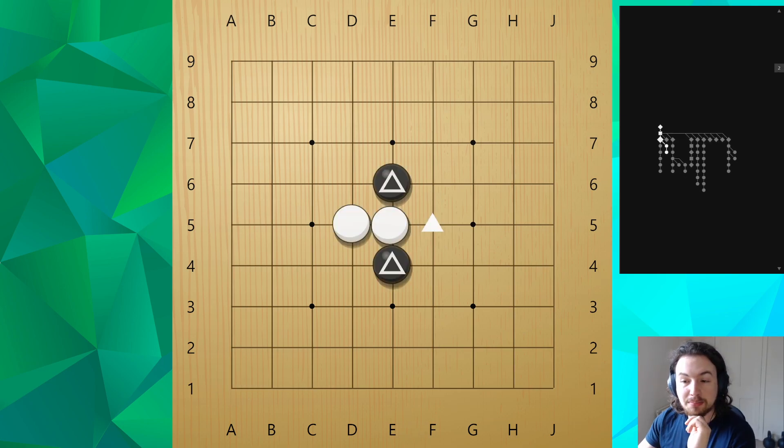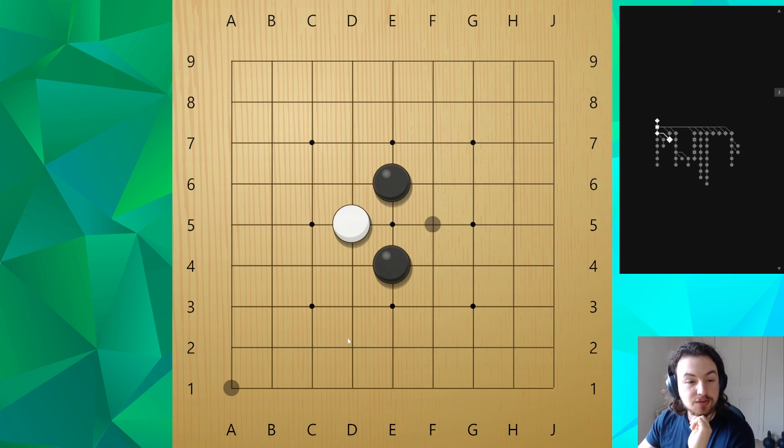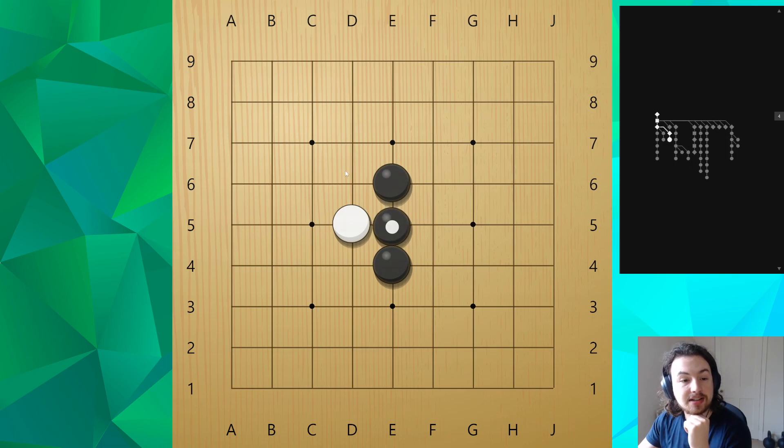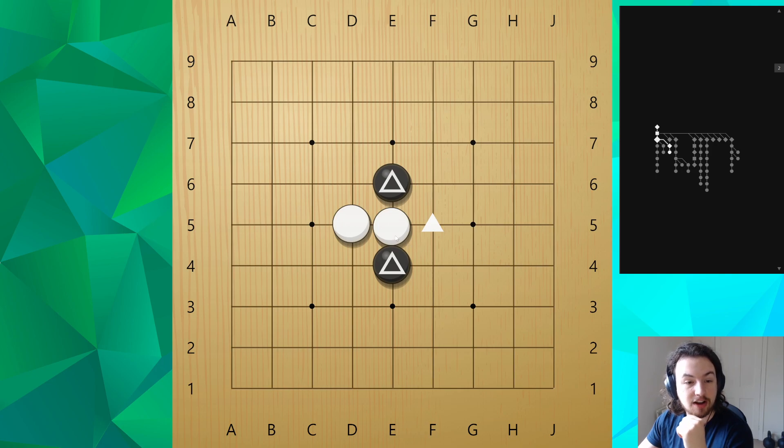What would be a little bit better for black if we could is to, well we can't remove stones from the game, but if we're black right now then obviously connecting is quite important because letting white have this e5 move is so painful.